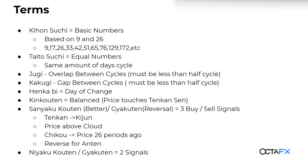Sankyaku Koten is a positive signal — 'Koten' means to improve or correct positively. Sankyaku Gyakuten is a reversal signal — 'Gyakuten' means reversal. 'San' means three, so there are three signals to buy and three signals to sell. These are what we already know: Tengkan above Kijun, price above the Ichimoku Cloud — the standard signals you've already been using.